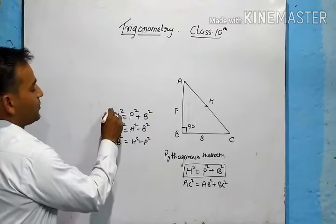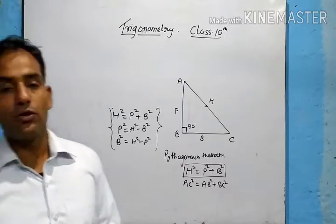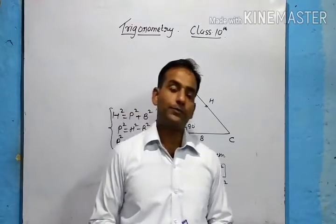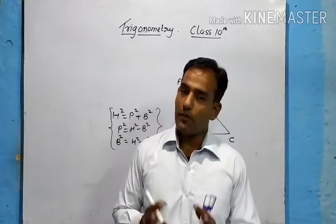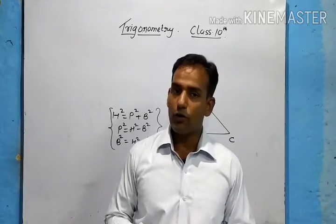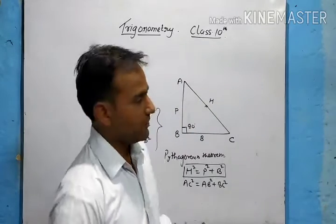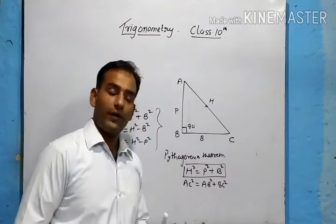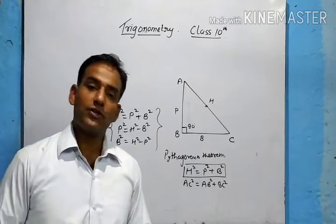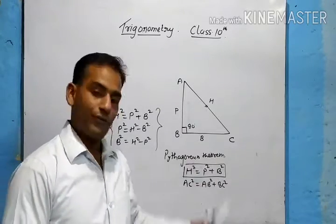Basic information about trigonometry: trigonometry is all about triangles. In the name 'trigonometry', 'tri' comes at the beginning — tri means three. A figure with three sides and three angles is a triangle, so trigonometry deals with triangles.